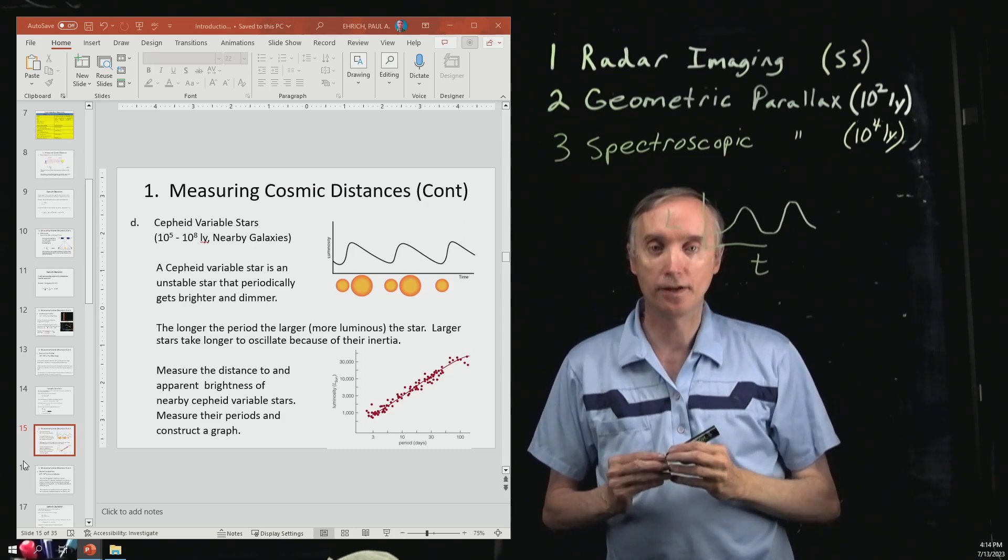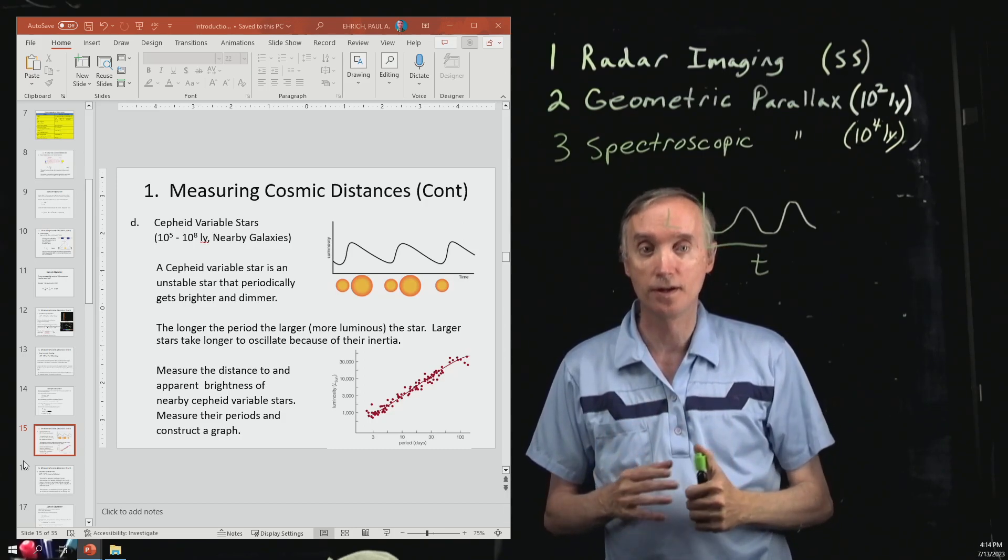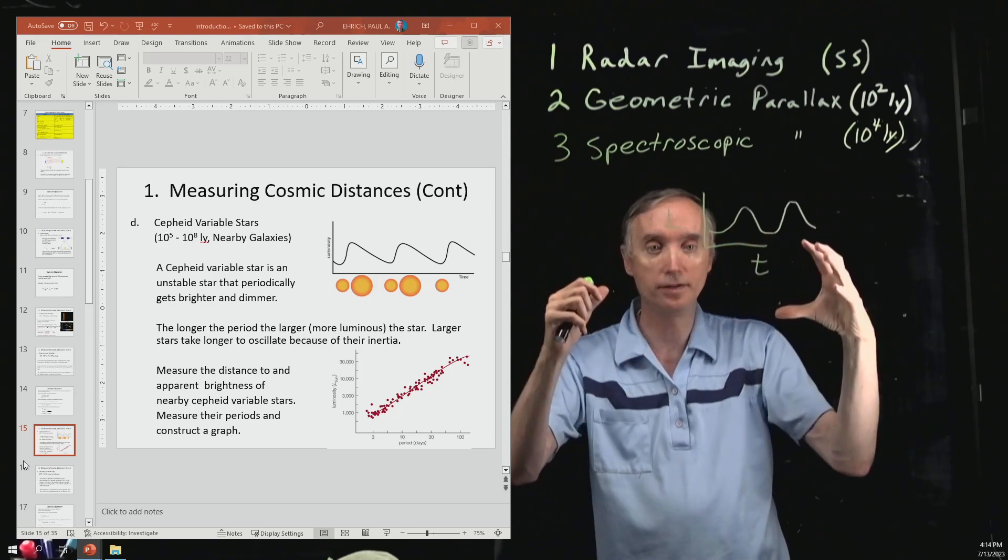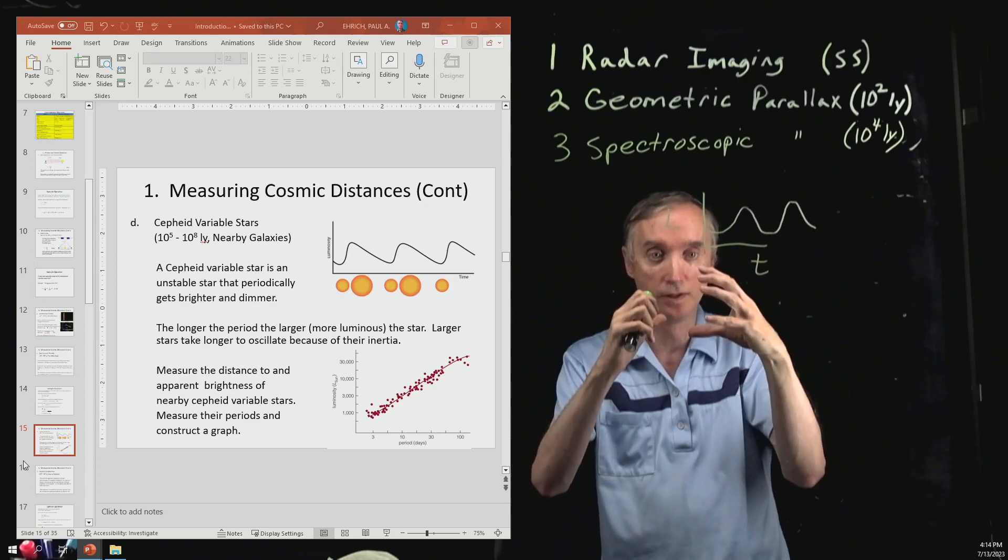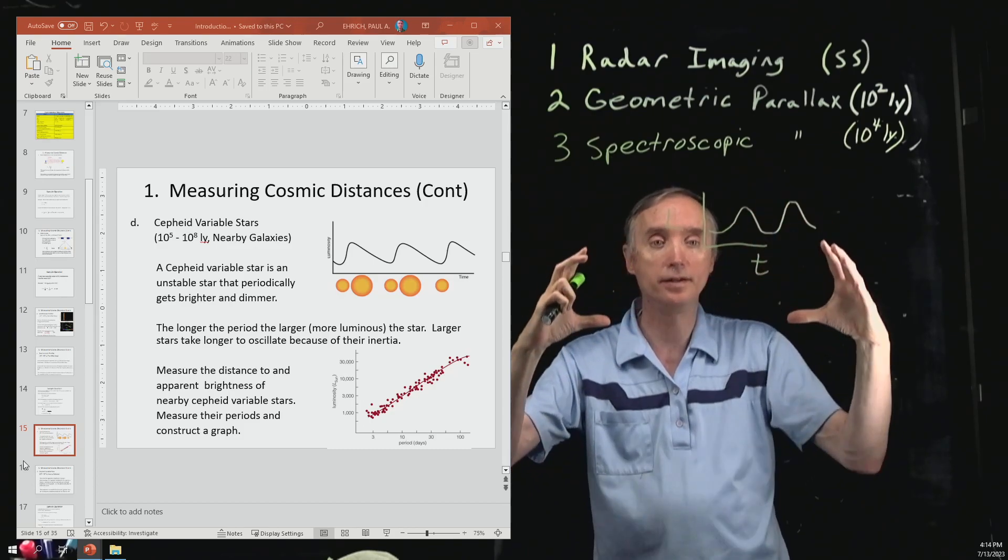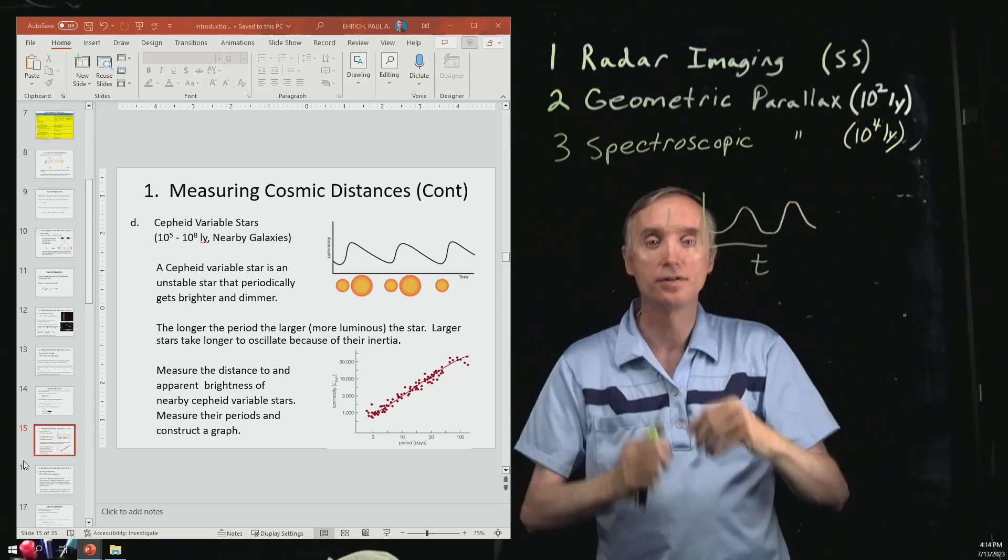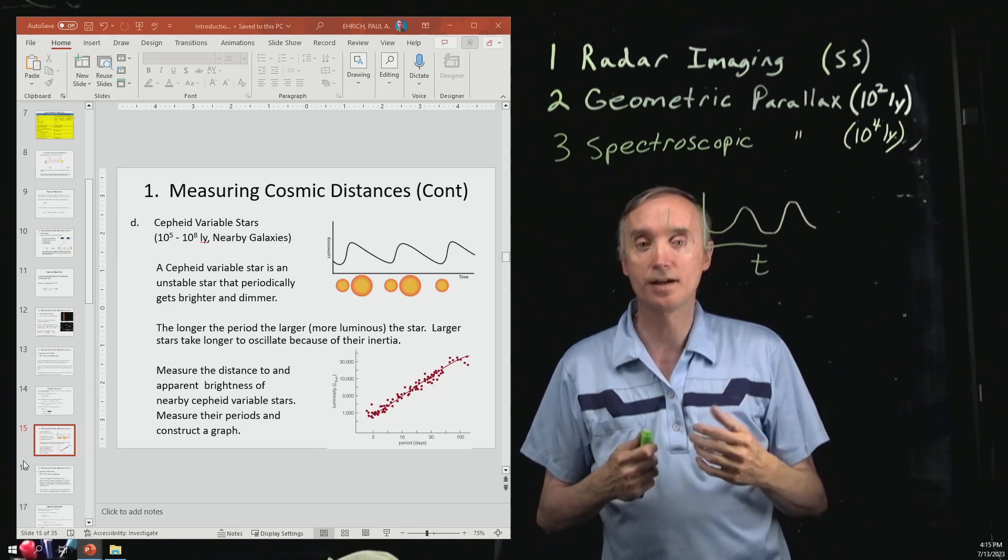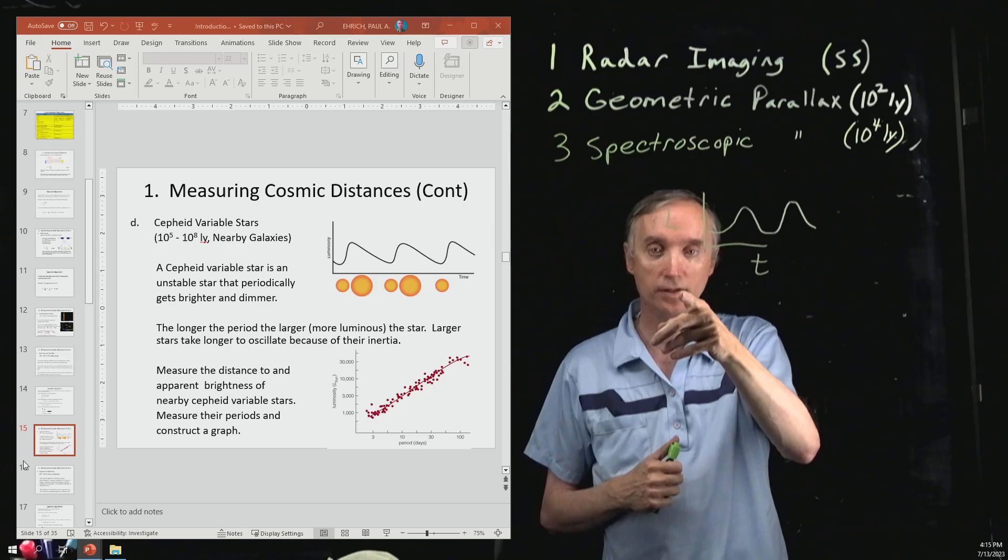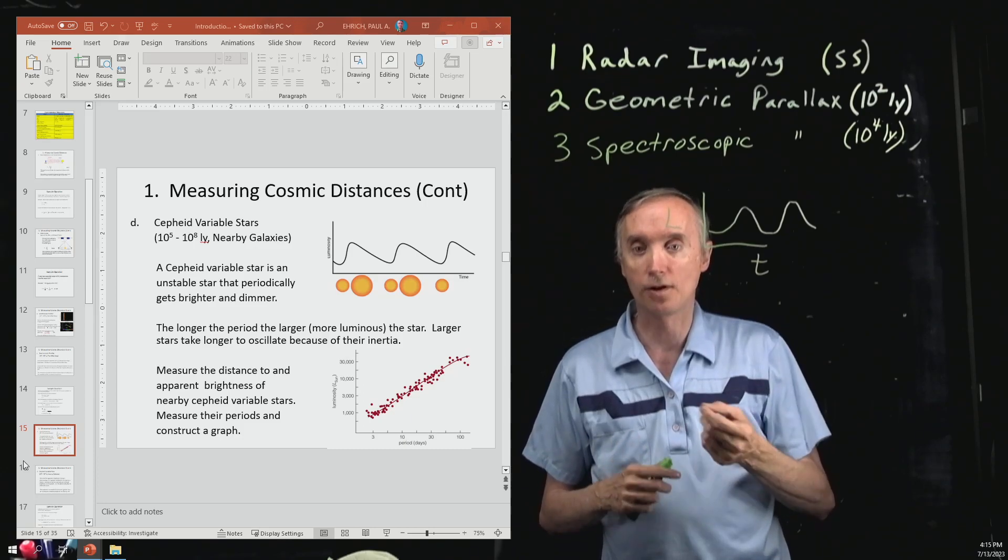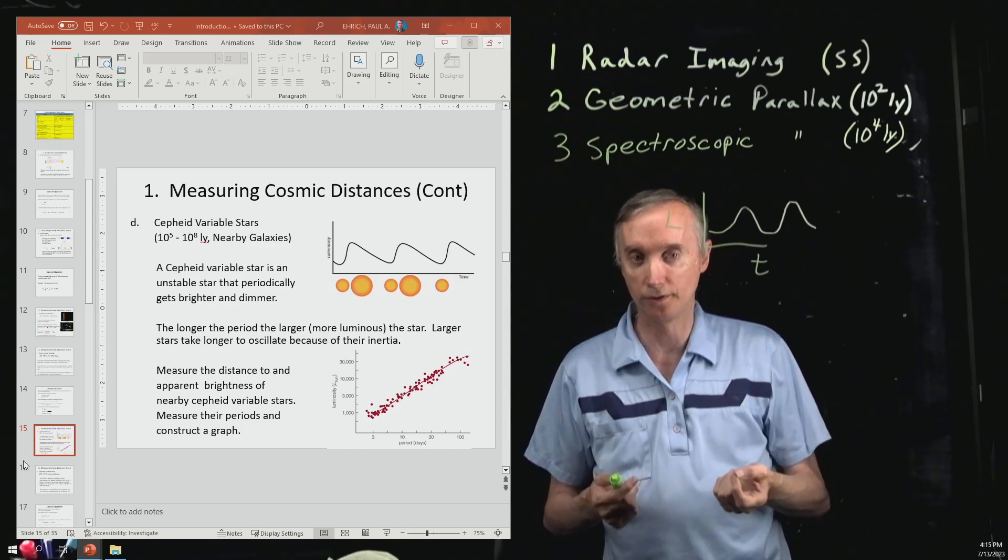Depending on the size of the star, it has a different period. So some get bright, dim, bright, dim, bright, dim. Others get bright and then dim and then bright and then dim again. So they have different periods, and that depends on the size of the star. The longer the period of the star, the more luminous the star is going to be. Larger stars take longer to oscillate because of their inertia.